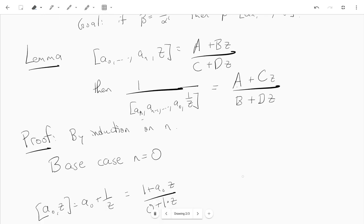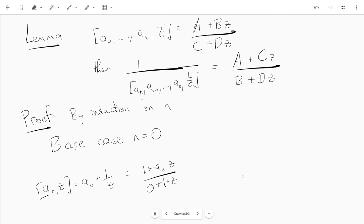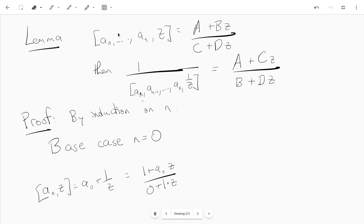The base case is n equals 0. First, let's write a0z as a plus bz over c plus dz. So you do a0 plus 1 over z, and you get, make it over a common denominator z, you get 1 plus a0z on the numerator and 0 plus 1z on the denominator. That would be like a is 1, b is a0, c is 0, and d is 1.